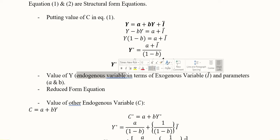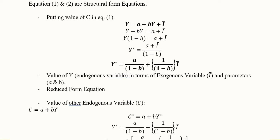This becomes the reduced form equation where we can see that value of Y, which is the endogenous variable, is in terms of the exogenous variable and parameters A and B. I was exogenous, given from outside the system, and Y can be determined from within the system. This is the reduced form equation where the endogenous variable is written in terms of the exogenous variable.